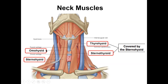The omohyoid muscle has two parts — an inferior and a superior part. It goes from the shoulder region on the scapula up to the hyoid bone. The word 'omo' means shoulder or of the shoulder region, and it originates from the hyoid bone — so, omohyoid.